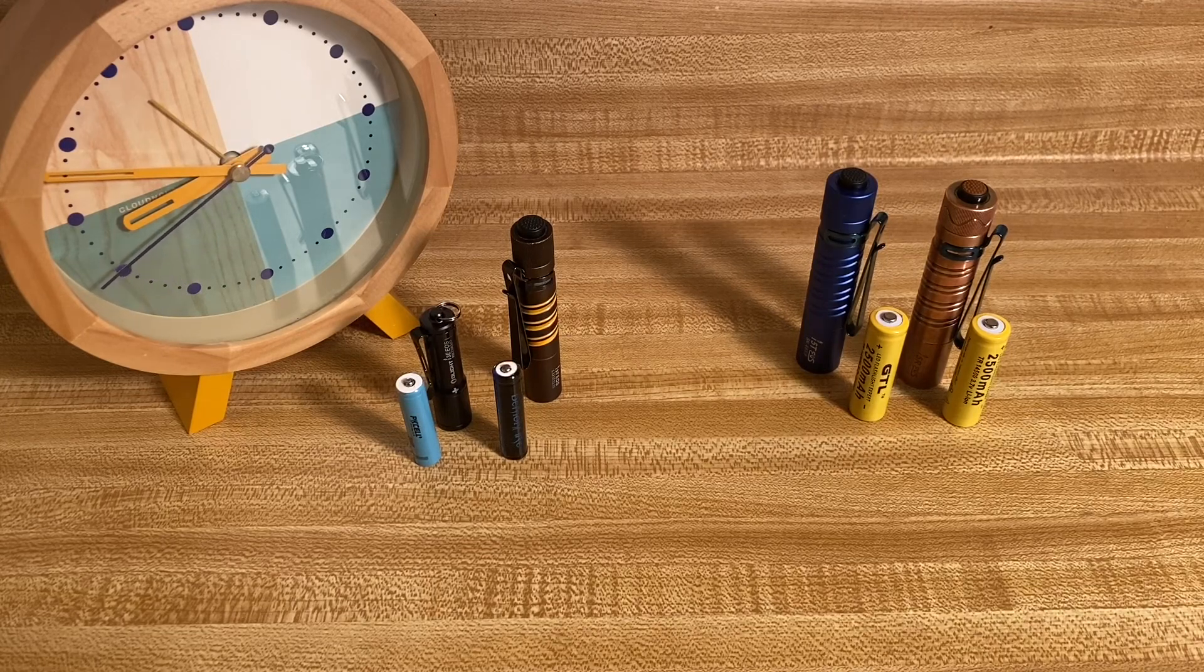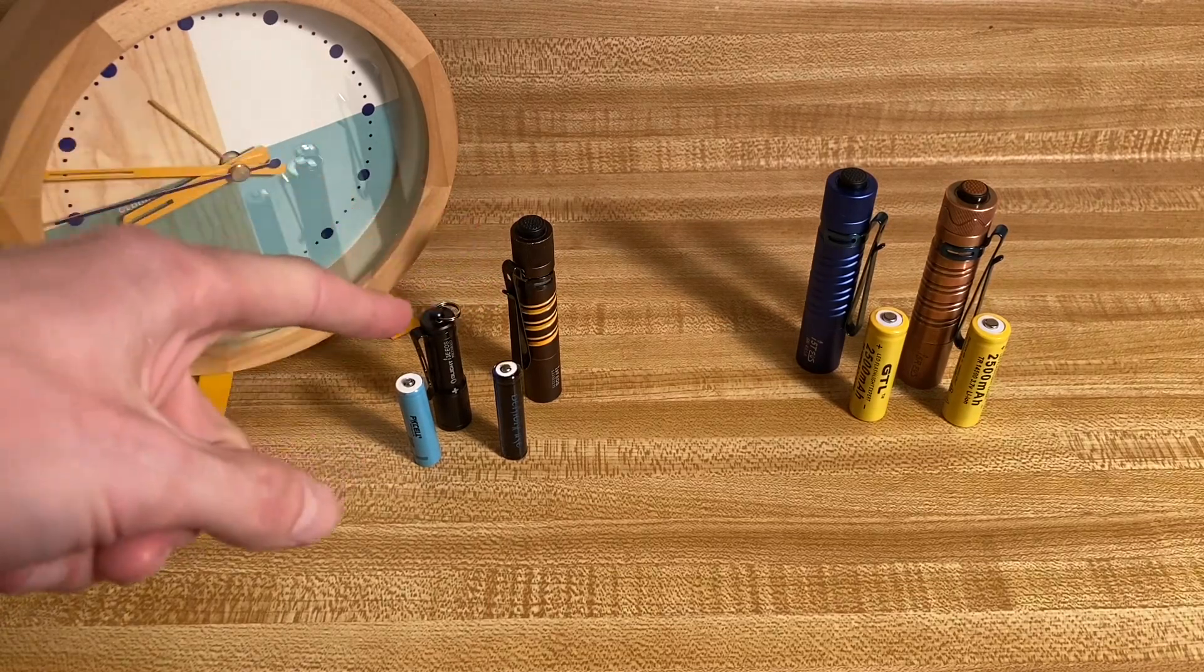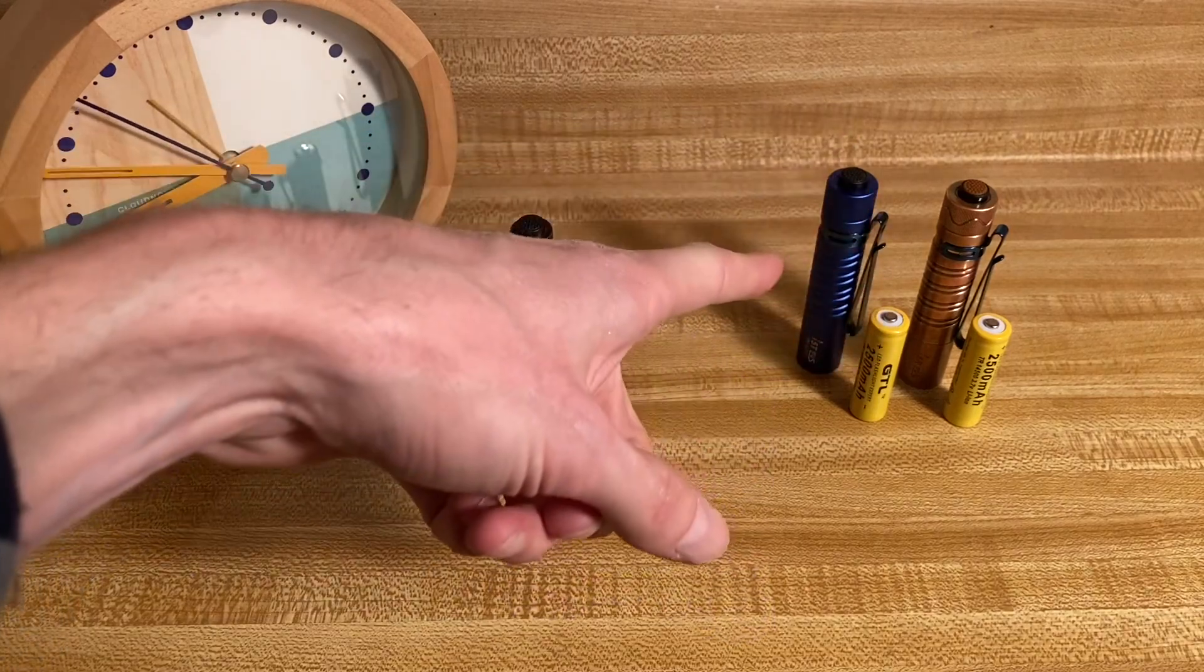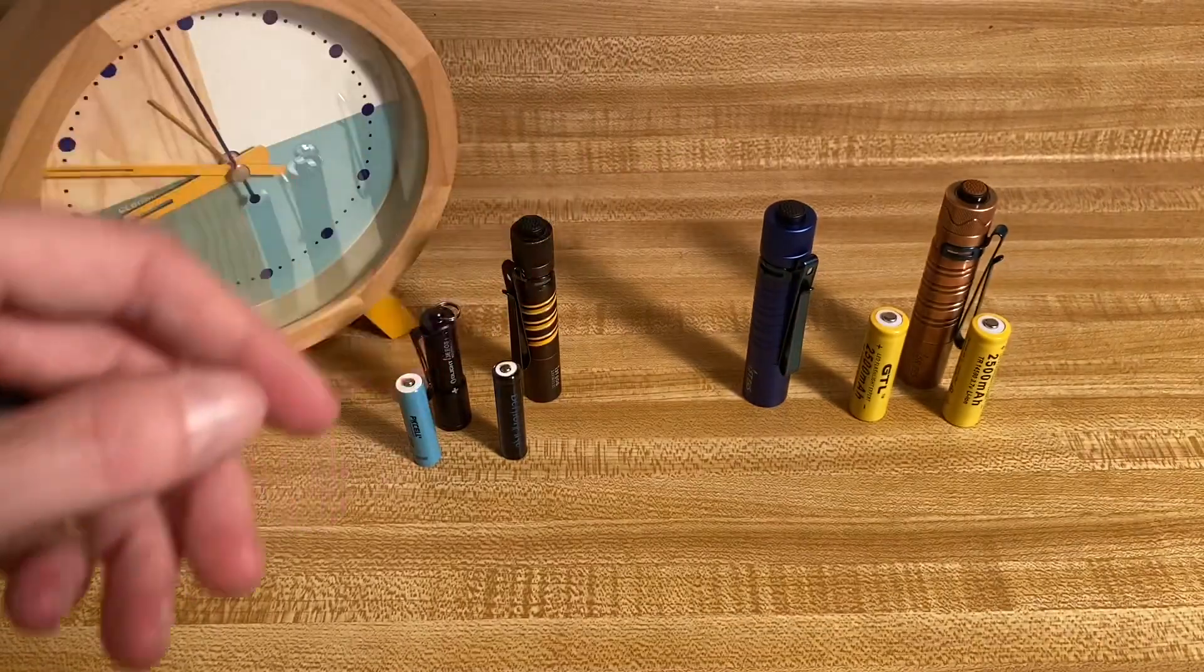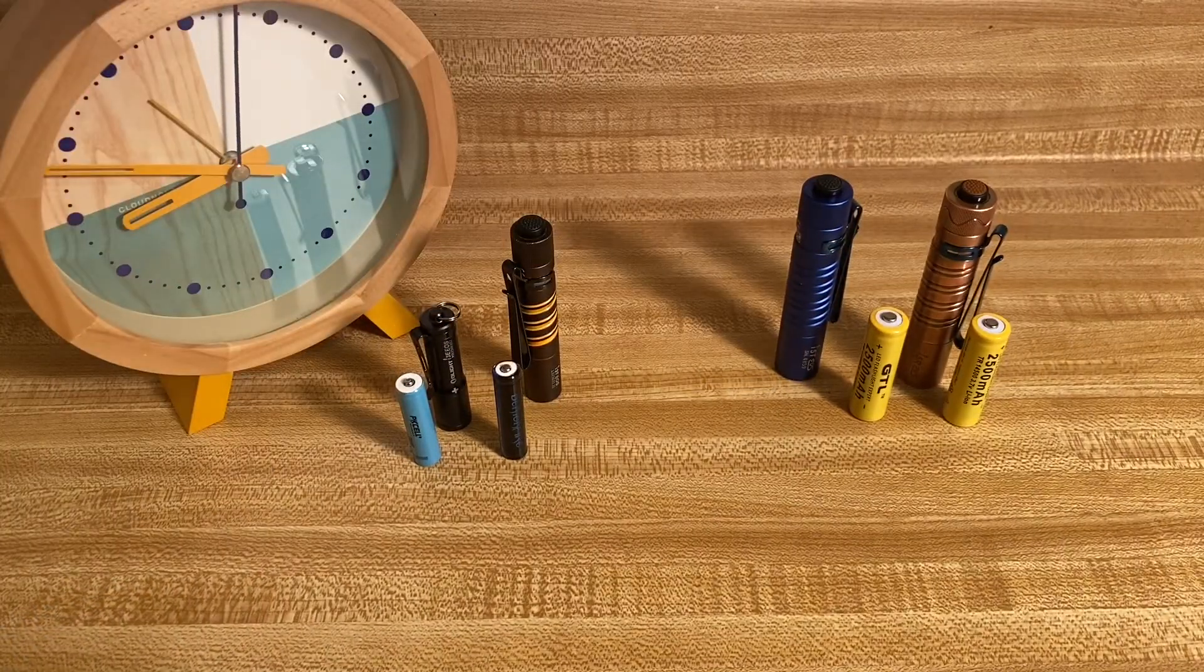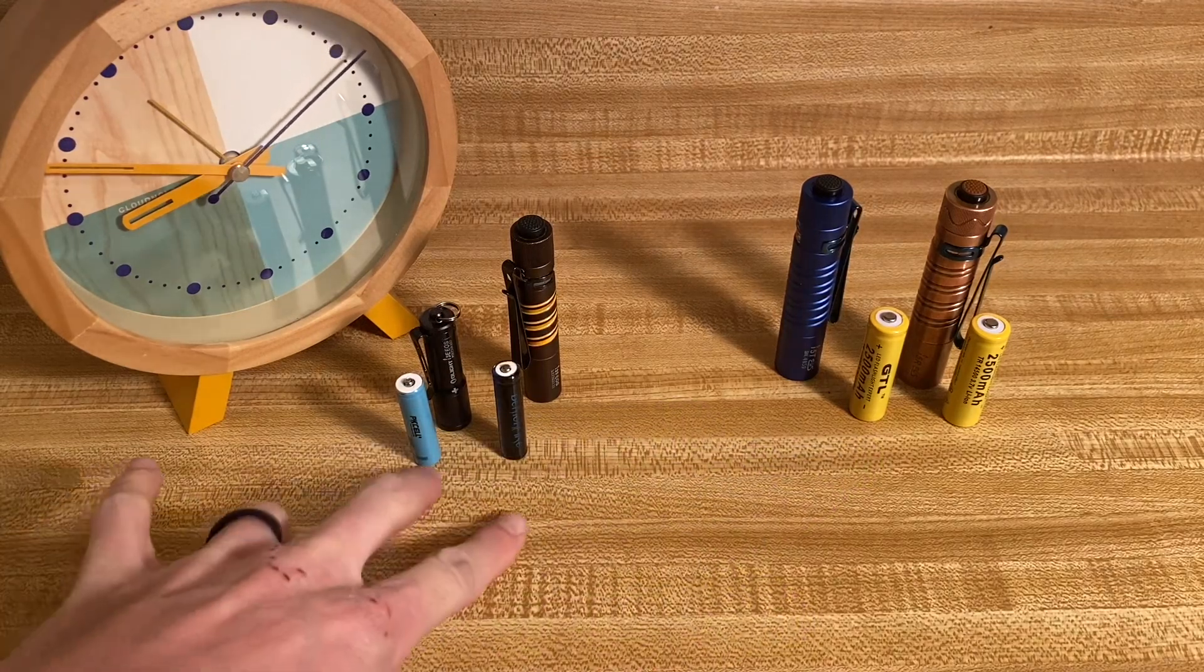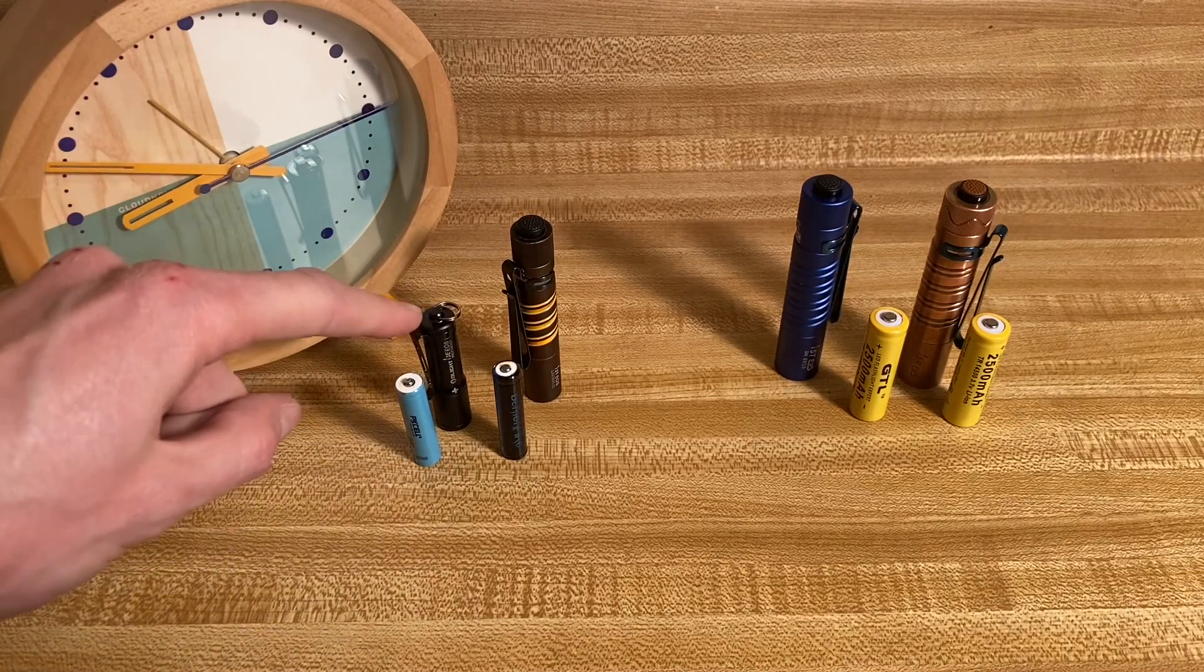Hot rodding a flashlight is a term that describes dropping a spicier battery into the light than what it's designed to run on. For example, these lights run on AAA batteries typically with a voltage of 1.5 or less, and the i5R's included battery is 2.4 voltage. The i5T runs on AA typically with voltage of 1.5. But today we're dropping in 14500s with voltage of 3.7, as do these 10440 lithium rechargeable cells going in the i3E and i3T.